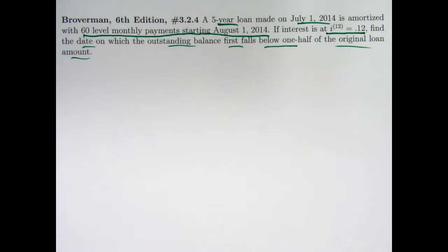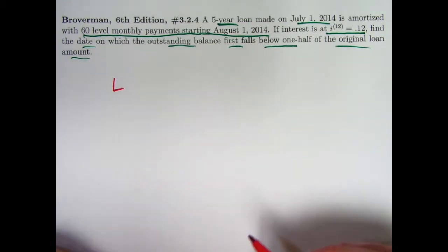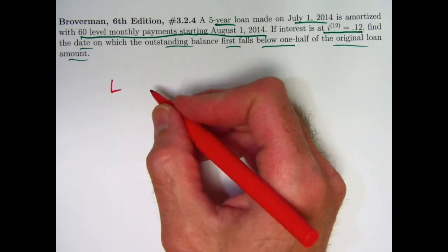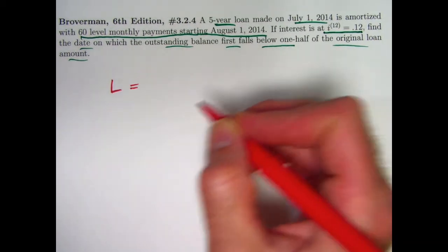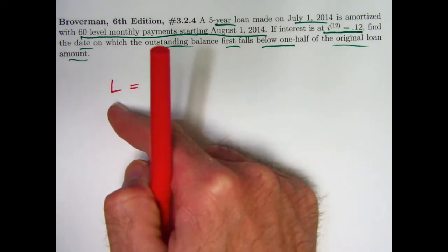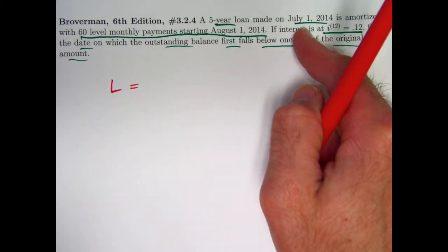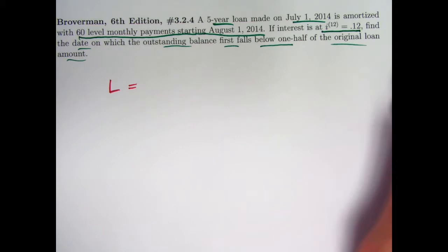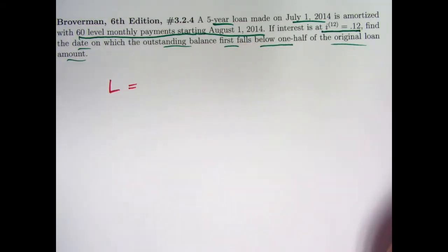Now we don't know the loan amount. We could call it L. It really won't matter what L is. We'll see. The basic idea about what L is in relation to the payback scheme is that its value at time zero, which would be July 1, 2014, would be the present value of all the payments.